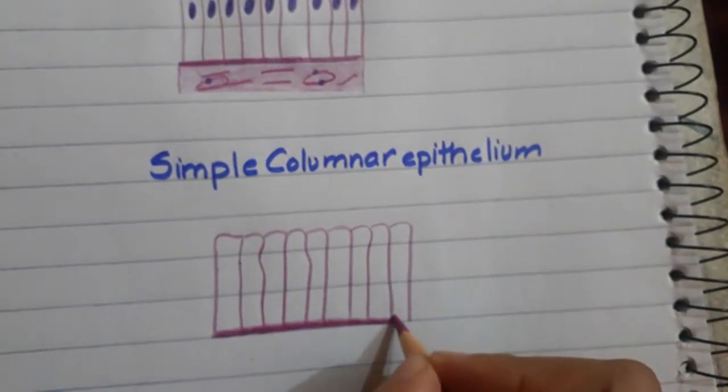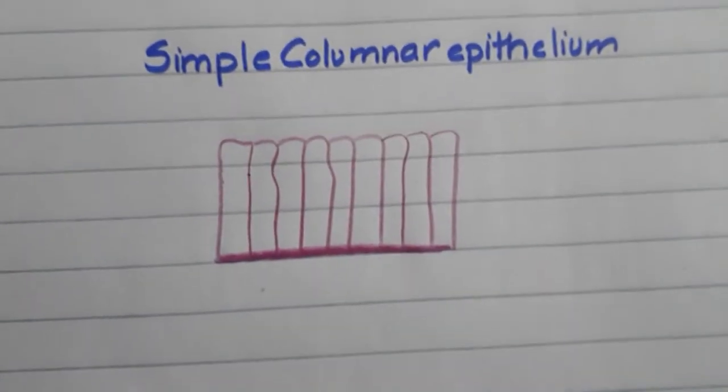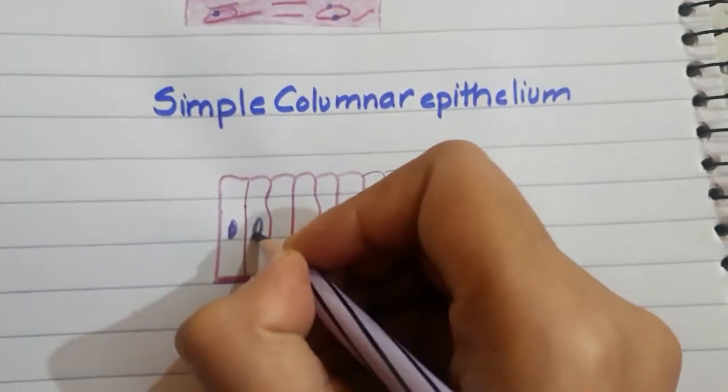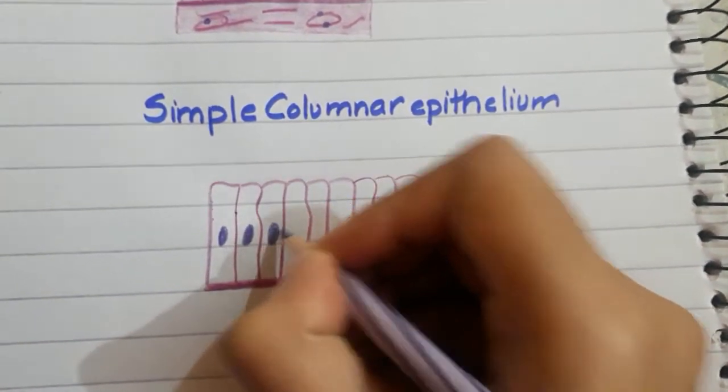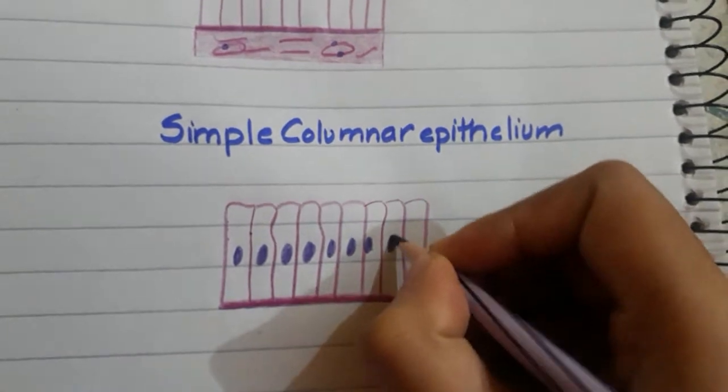We will start the columnar. What will we do? We will make the columnar. The columnar is an epithelium with an oval nucleus. This is our oval nucleus.